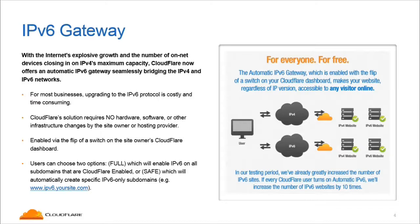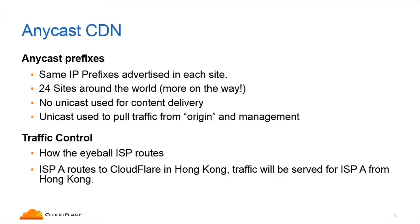I'm going to talk about our Anycast CDN — it's the technology that we use to distribute our network for CDN purposes. With Anycast, it's important that you announce the same IP address from every one of your sites. We currently have 24 sites around the world and we're announcing the same IP addresses from all of them. It's important to note that we don't use any Unicast addresses — it is all Anycast based. We do use Unicast to pull traffic from origin servers, but we use Anycast to serve to ISPs.